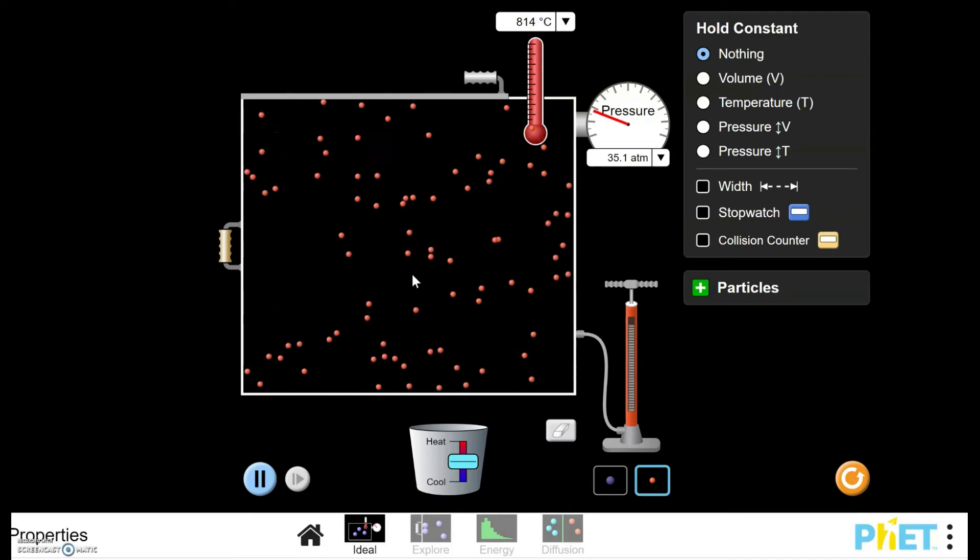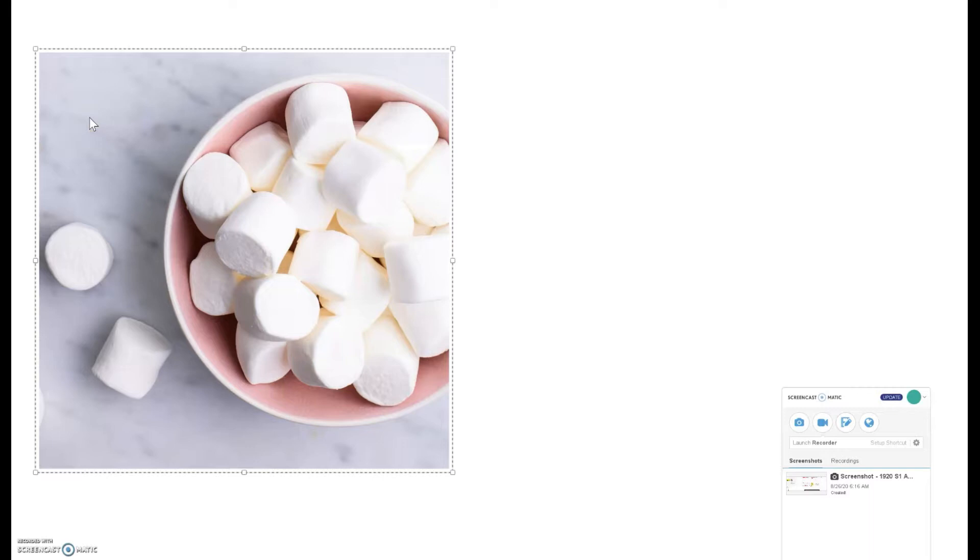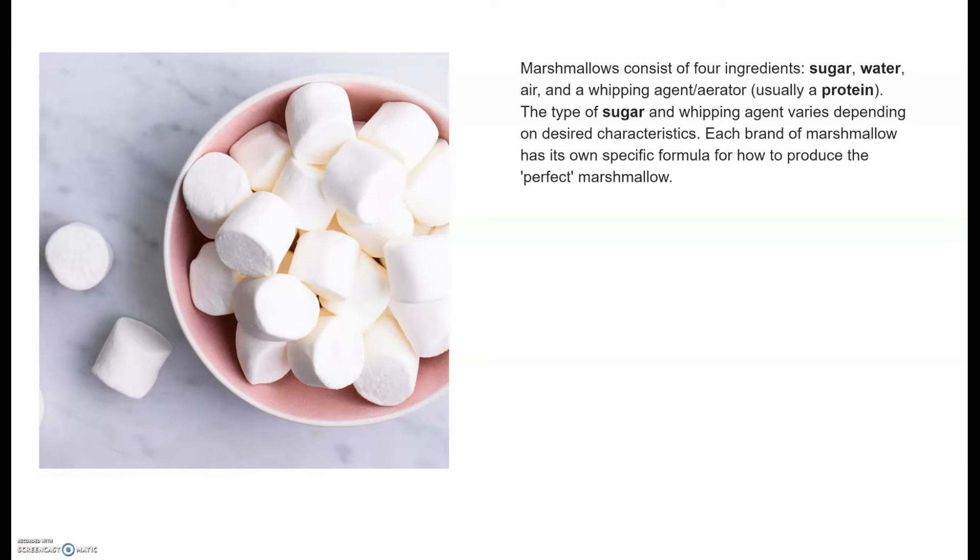We're going to investigate what happens when we start to play around with temperature and its effect on volume. Today, the object of our experimentation will be a marshmallow. You're probably asking, why a marshmallow? Let's go take a look at the ingredients of a marshmallow. Marshmallows consist of four ingredients, and what we're interested in is the fact that one of the ingredients in a marshmallow is air. This is going to be the gas that we're going to subject to Charles Law.